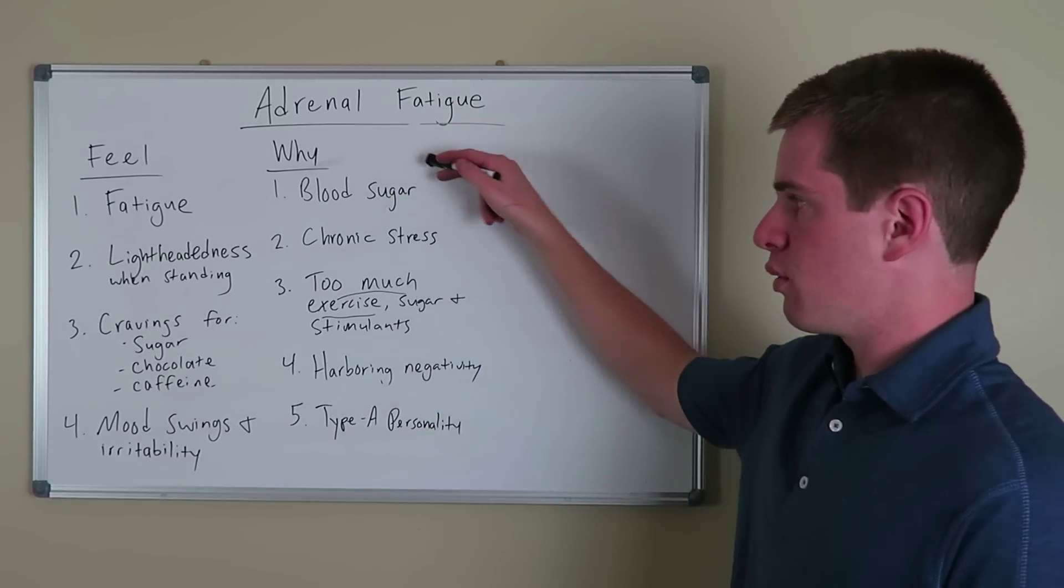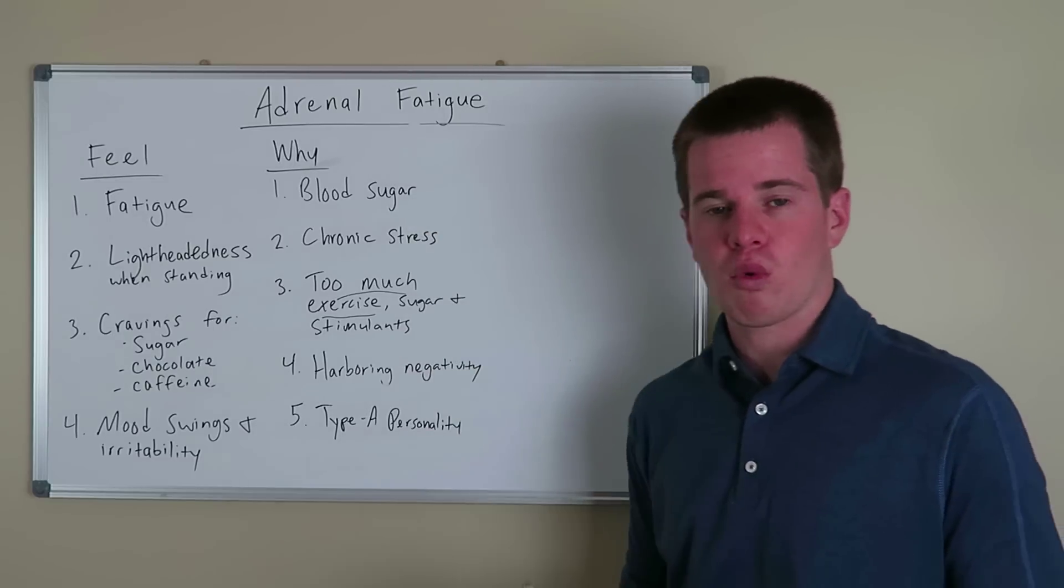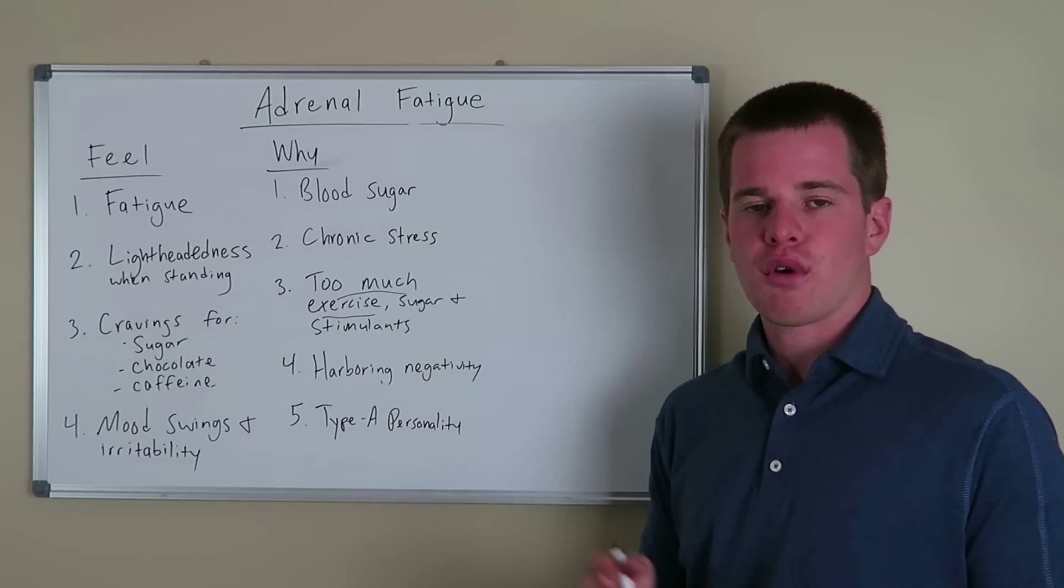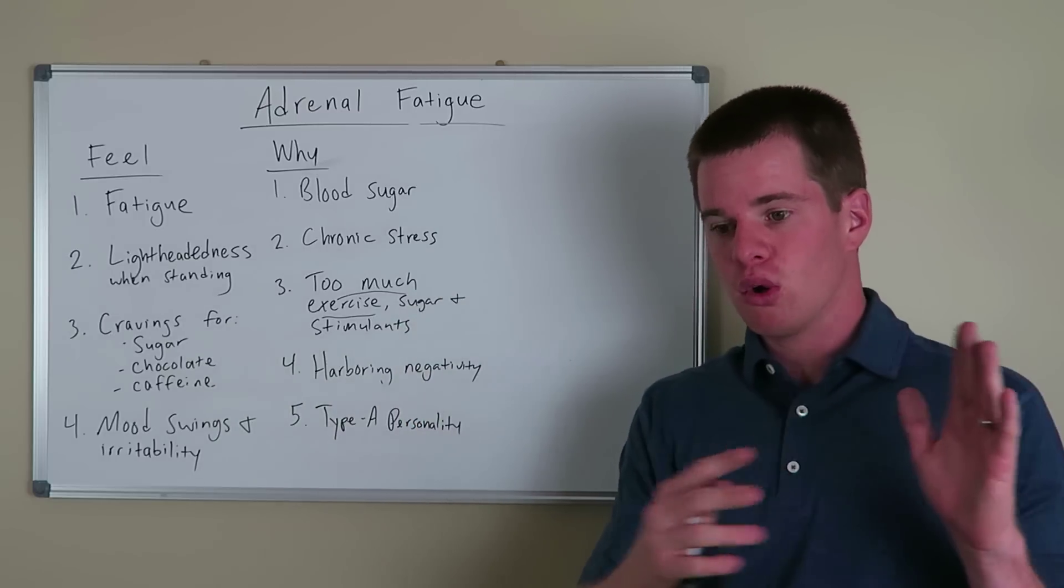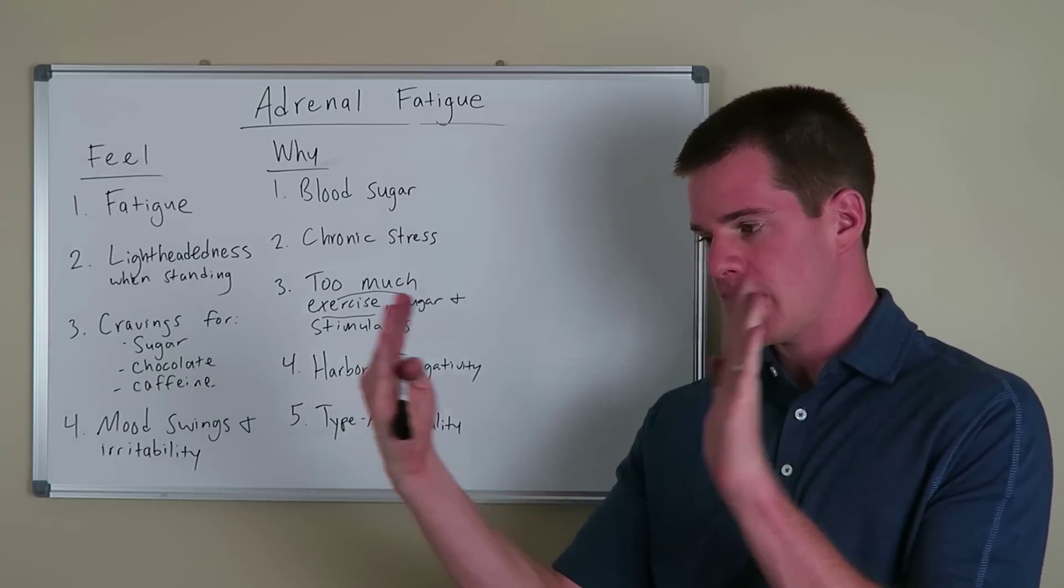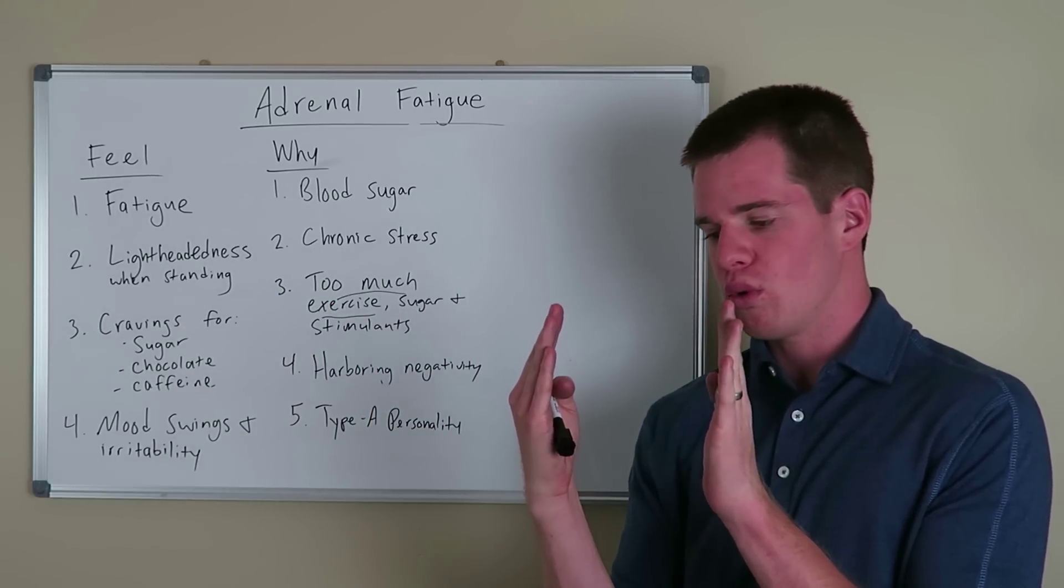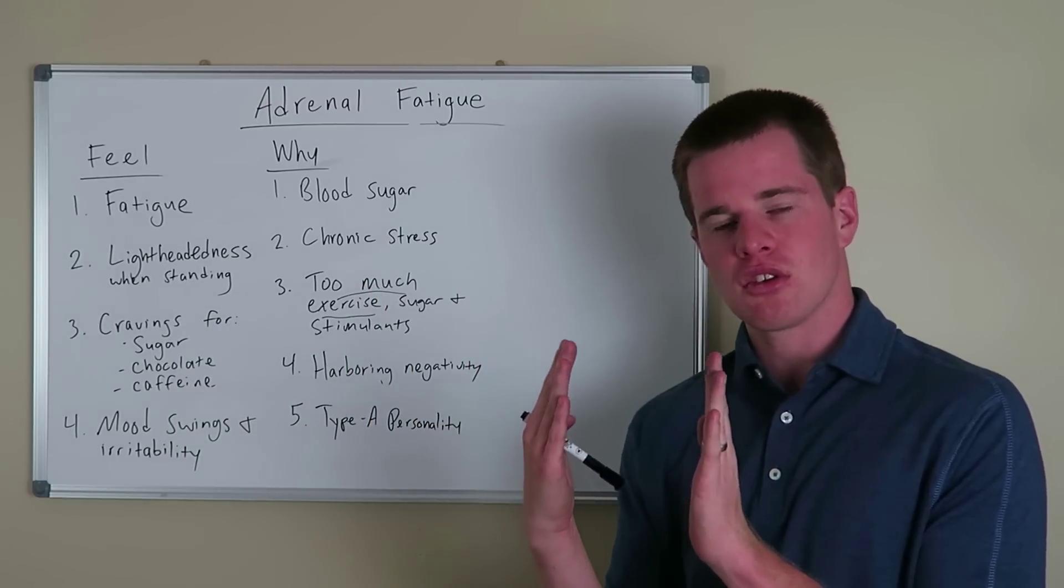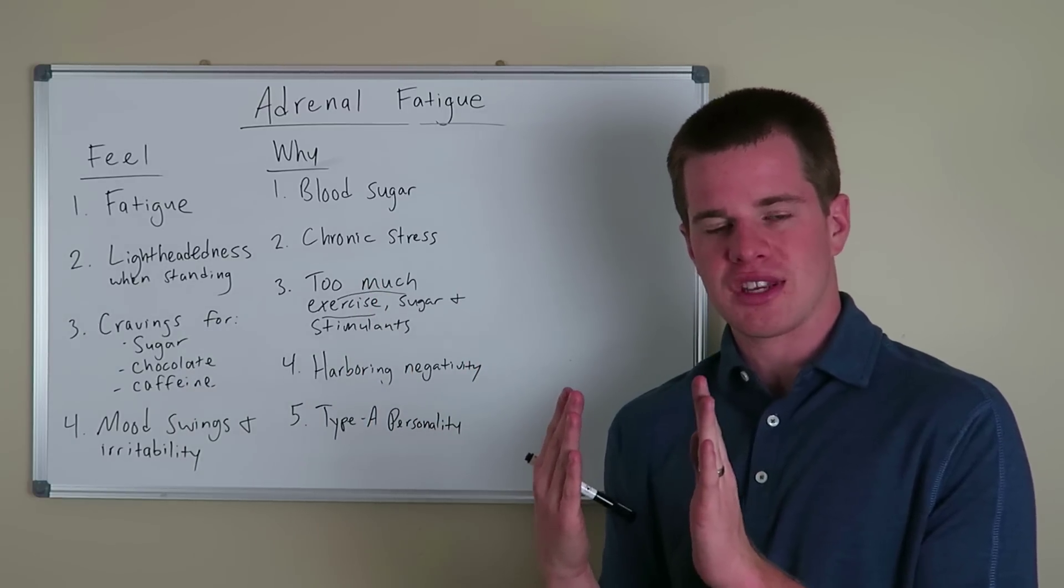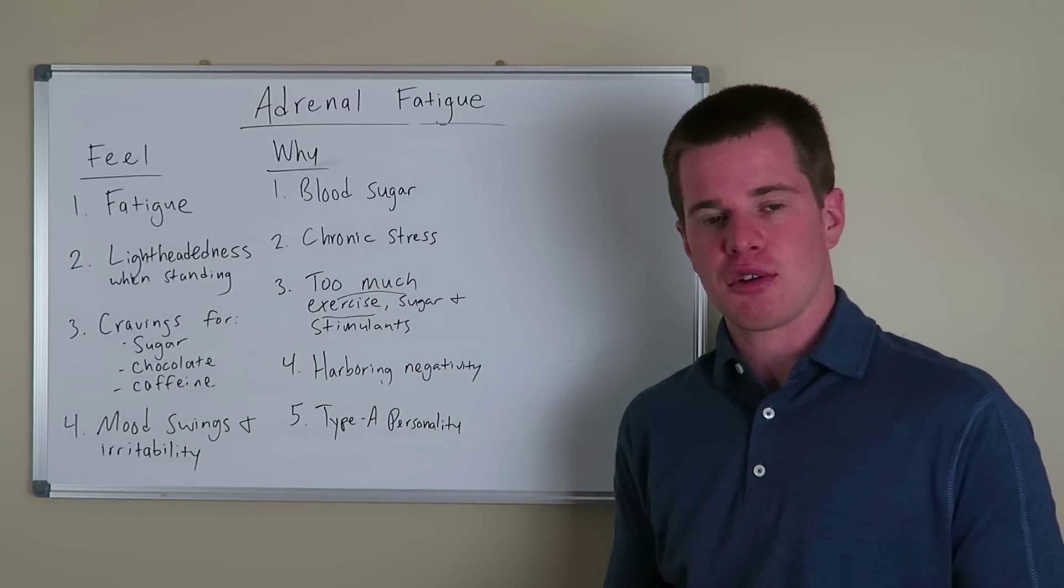So why does this happen? Well, blood sugar is the number one starting place for people with adrenal fatigue. So you've heard about intermittent fasting, where you're trying to basically skip a meal, and you're going to combine all of your eating into one, maybe not combine, but condense is the better word. You're going to condense all of your eating into one small time window throughout the day. The rest of the time, you're basically fasting.